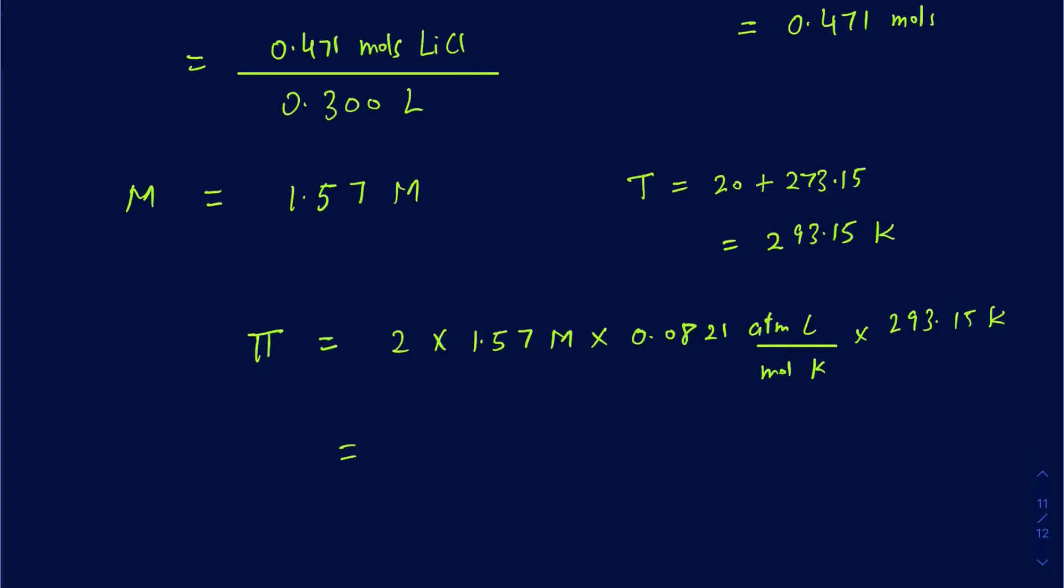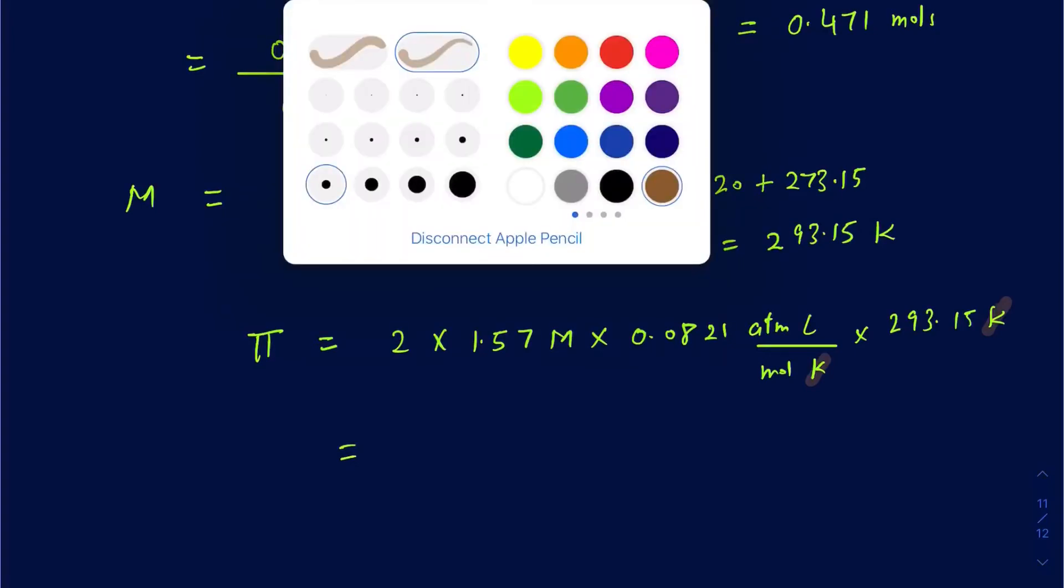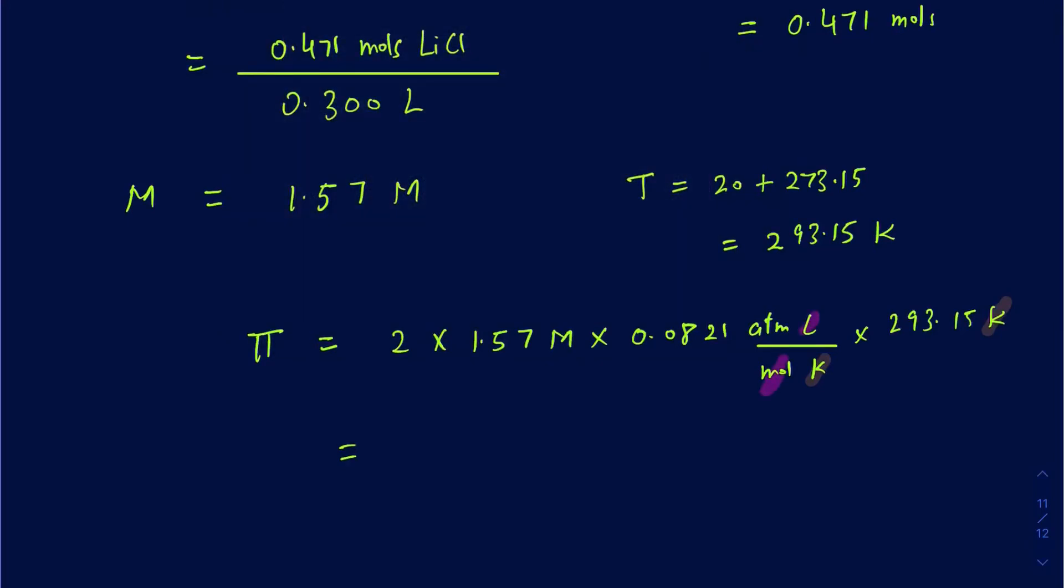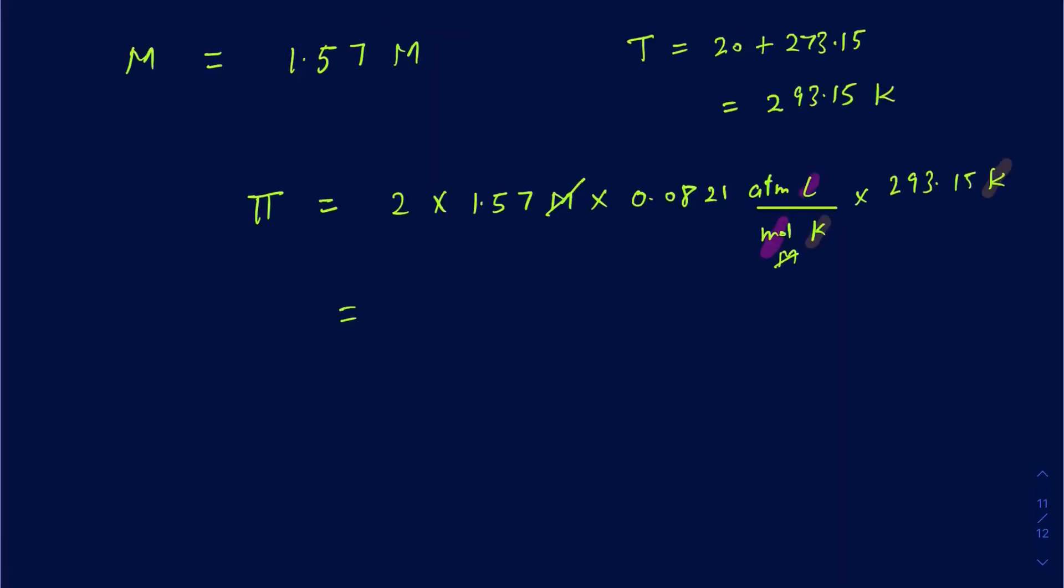And then remember the moles over liters, so I'll change the color there. So remember this moles and this liters is actually the molarity. So that's how the molarity is going to cancel out with that molarity here. There would have been molarity if you remove the moles and liters there. Do the math here: 2 times 1.57 times 0.0821 times 293.15. So that comes out to be 75.57 atmosphere.